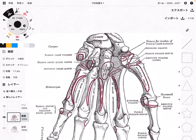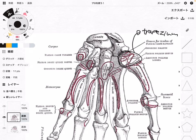Now I will explain the second row, close to the fingers. Very close to the navicular, you see this bone — this is the trapezium. Next to the trapezium, this one is the trapezoid.